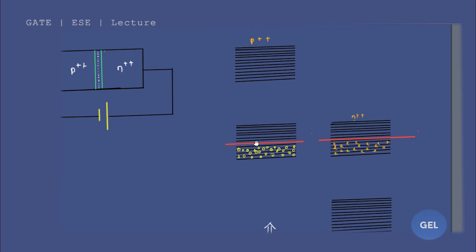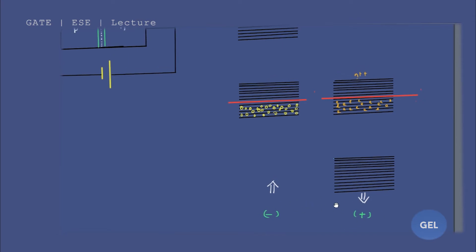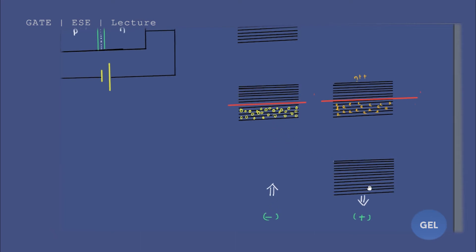In the unbiased case, the Fermi energy level for p-type and the Fermi energy level for n-type coincide. Now if we apply reverse bias voltage — that is, the positive side to the n-plus and the negative side to the p-plus — this energy level will start decreasing.